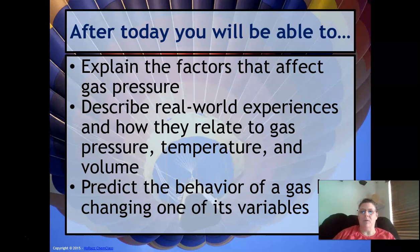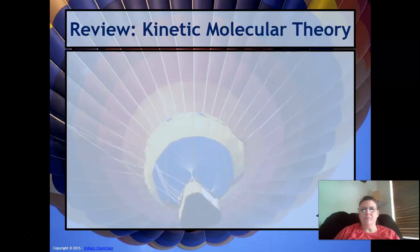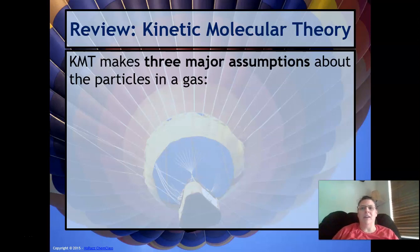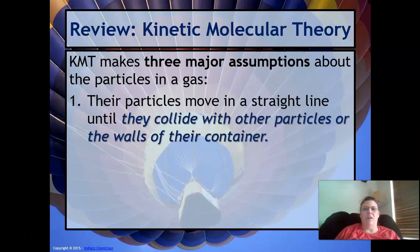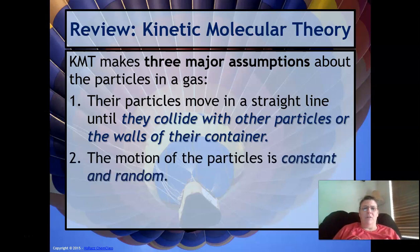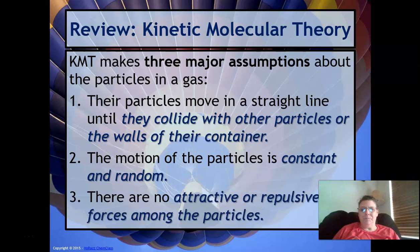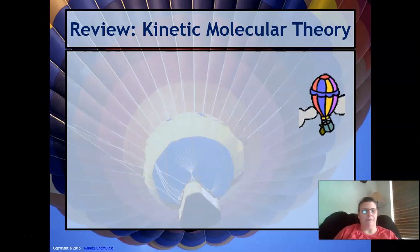We're going to review a little bit of KMT — we did this before we left. KMT makes three major assumptions: first, that all particles move in a straight line until they collide, which is kind of like Newton's First Law; the motions of particles are constant and random; and there are no attractive or repulsive forces among the particles — they just kind of go their own way.